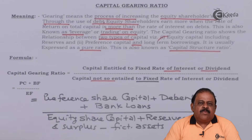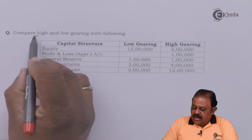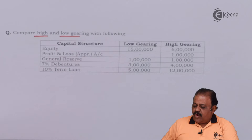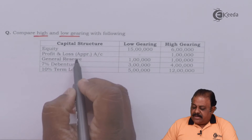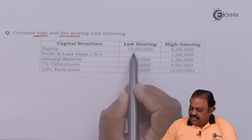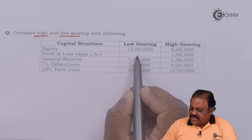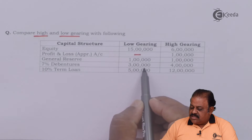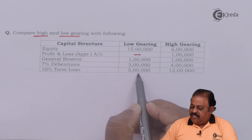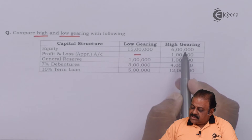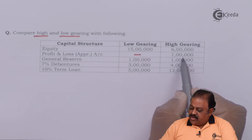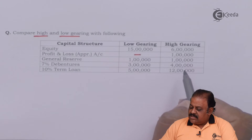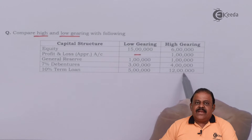To understand this concept more precisely, let us take a small example comparing high and low gearing. In the first case: equity 15 lakhs, profit and loss appropriation nil, general reserve 1 lakh, 7% debenture 3 lakhs, 10% term loan 5 lakhs. In the second case: equity 6 lakhs, profit and loss appropriation 1 lakh, general reserve 1 lakh, 7% debenture 4 lakhs, and 10% term loan 12 lakhs.